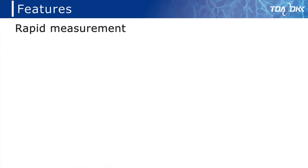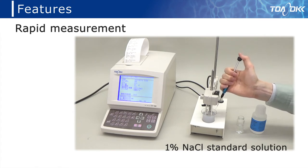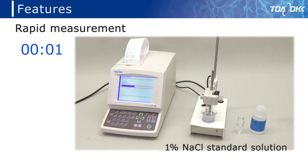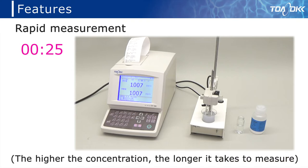The second feature is measurement in a short time. Here is an example of measuring 1% NaCl standard solution. The measured value will count up. With 1% NaCl, it takes about 25 seconds from the start of measurement to print out, and measurement can be performed in a short time.